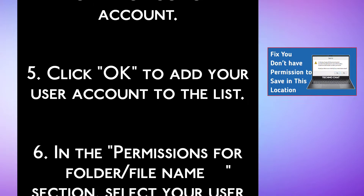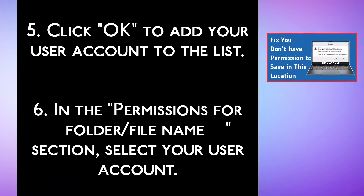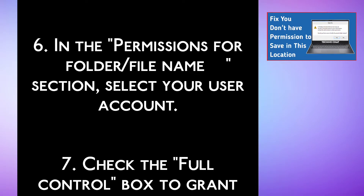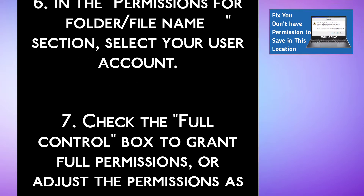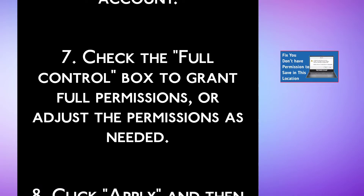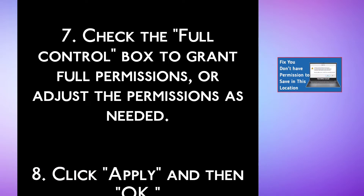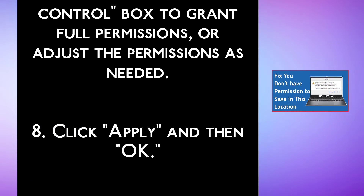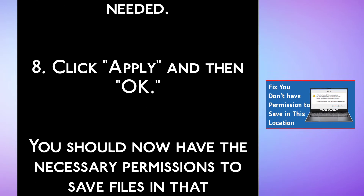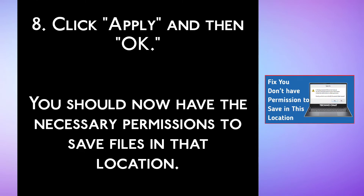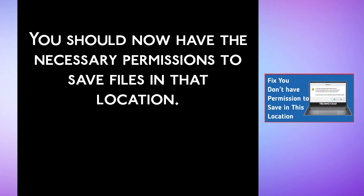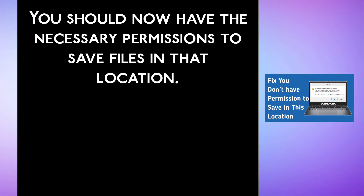Step 5, click OK to add your user account to the list. Step 6, in the permissions for the folder or file name section, select your user account. Step 7, check the Full Control box to grant full permissions, or adjust the permissions as needed. Step 8, click Apply and then OK. You should now have the necessary permissions to save files in that location.